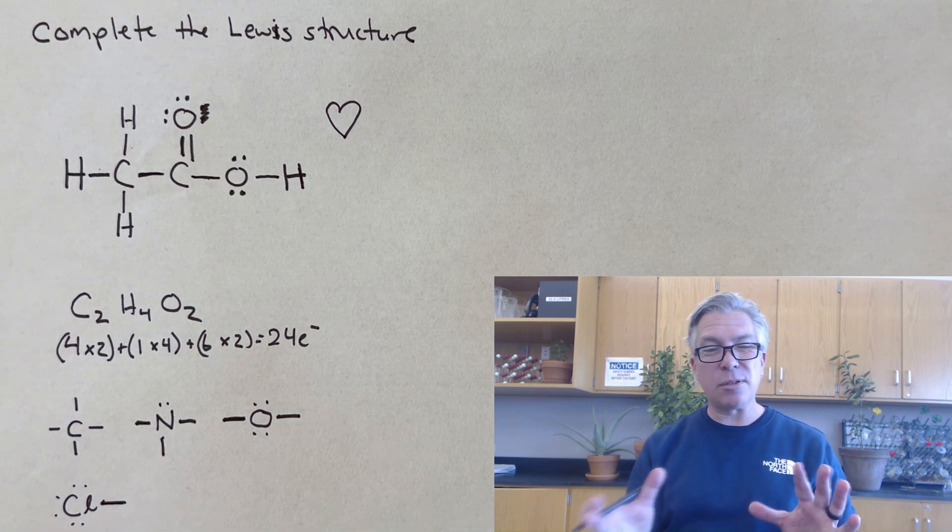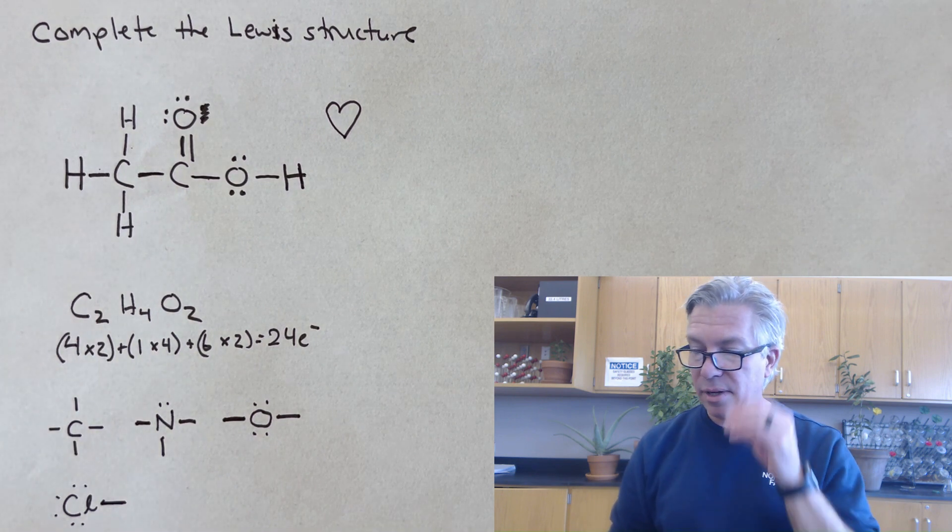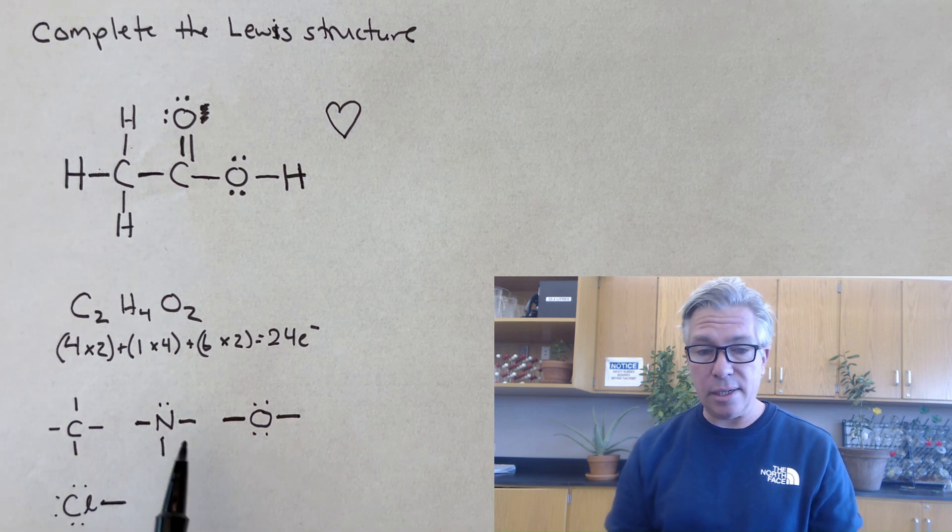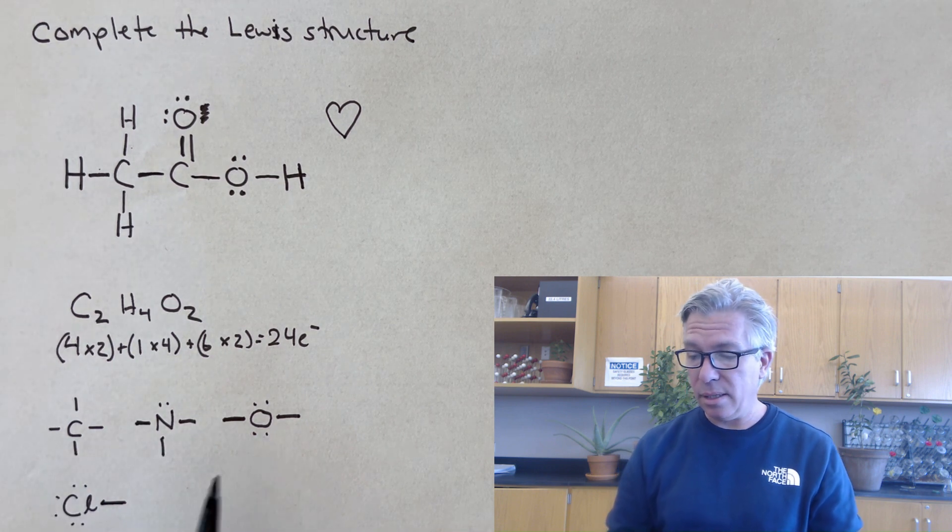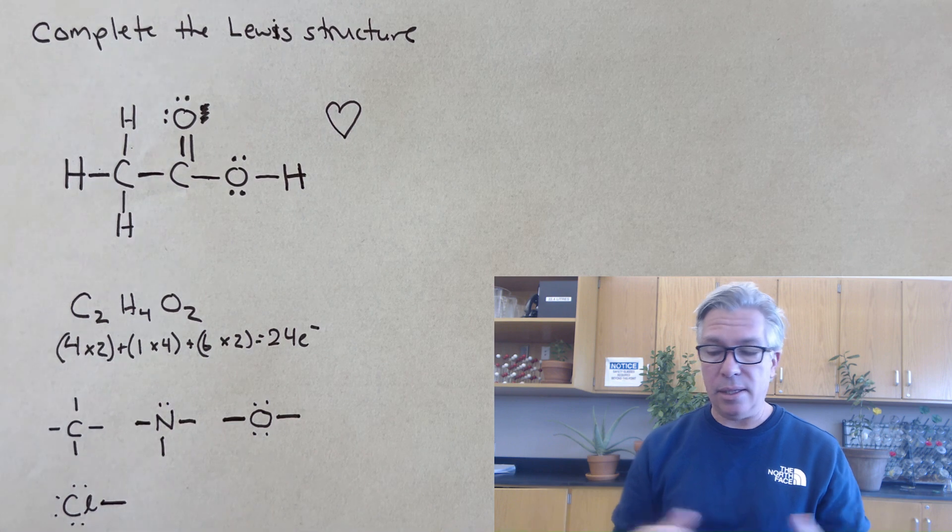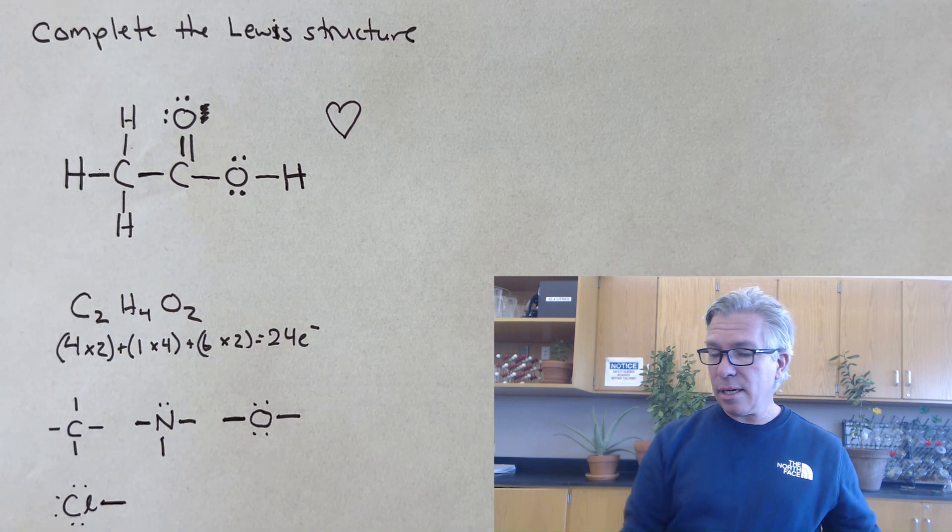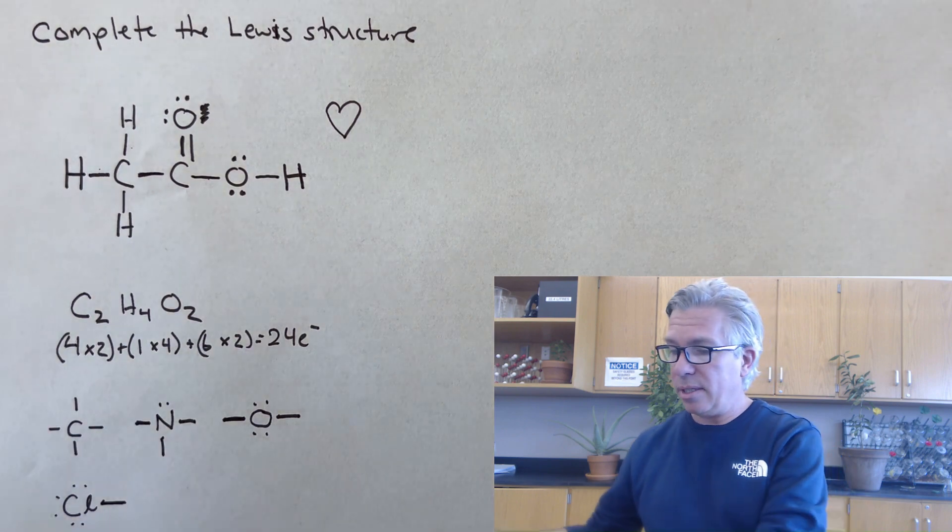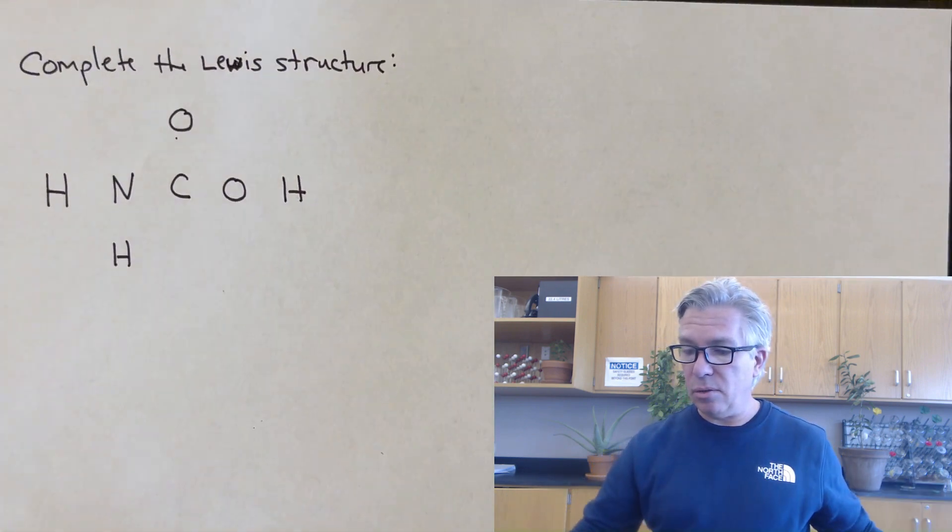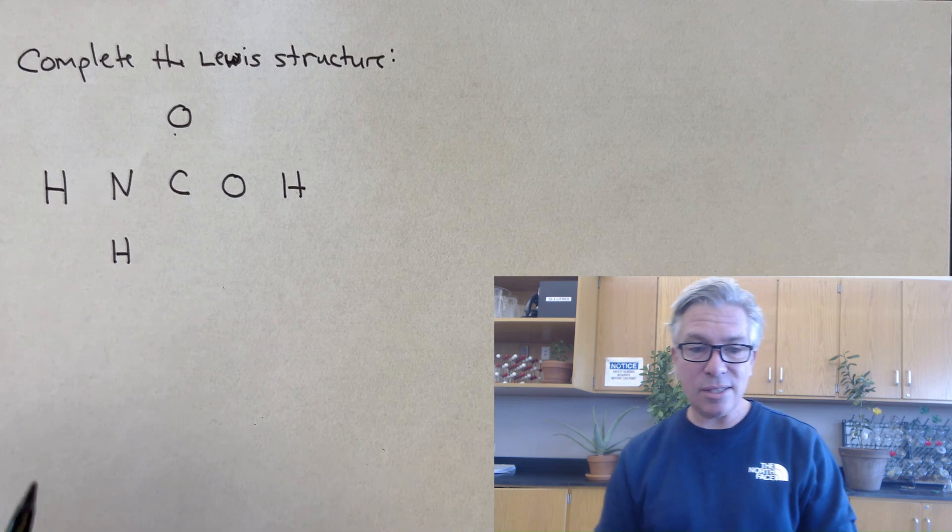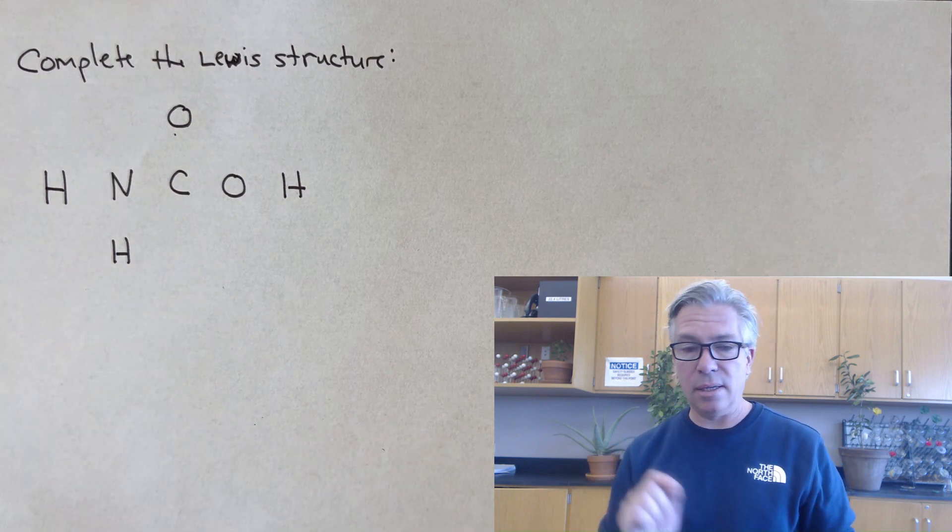When you're doing these problems, sometimes there's more than one way for them to satisfy the octet rule, but you're generally looking for carbon to have four bonds, nitrogen to have three, oxygen to have two bonds, halogens one, and hydrogen, of course, one. So let's take a moment and I'll put up another example. Feel free to pause the video and see if you can complete this Lewis structure in the same way we completed the last one.